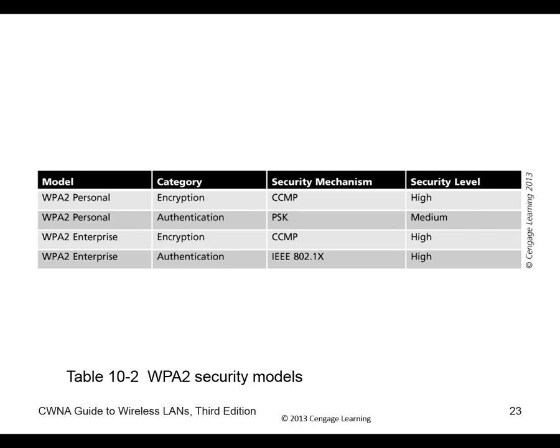For WPA2 Personal, encryption uses CCMP at a high level; authentication using PSK is rated medium security. For WPA2 Enterprise, you use 802.1x instead of PSK — you can't use PSK on an enterprise system — and authentication is rated high. So if asked the authentication security level of WPA2 Personal, the answer is medium, because it's pre-shared key.